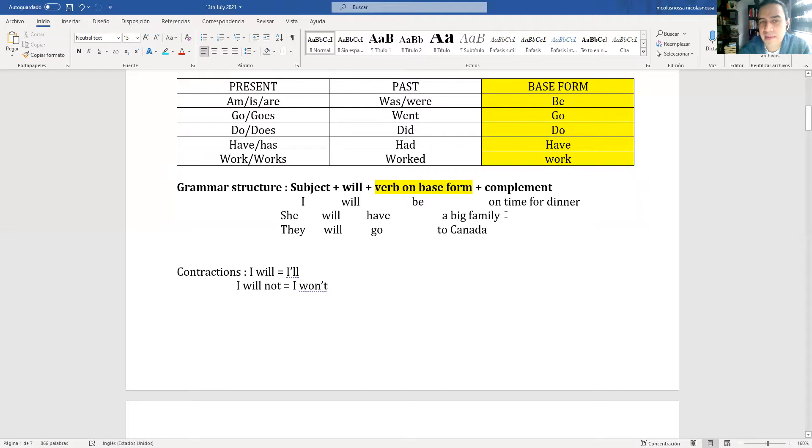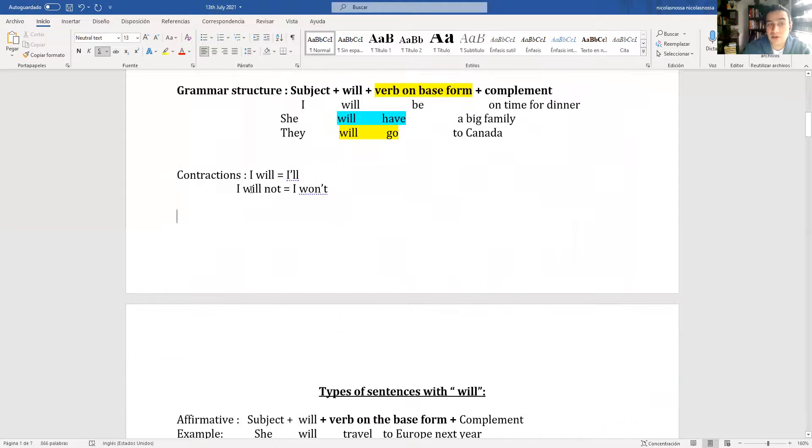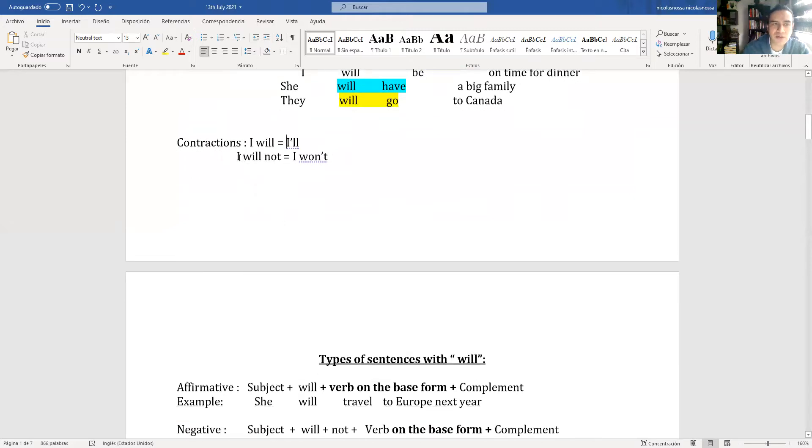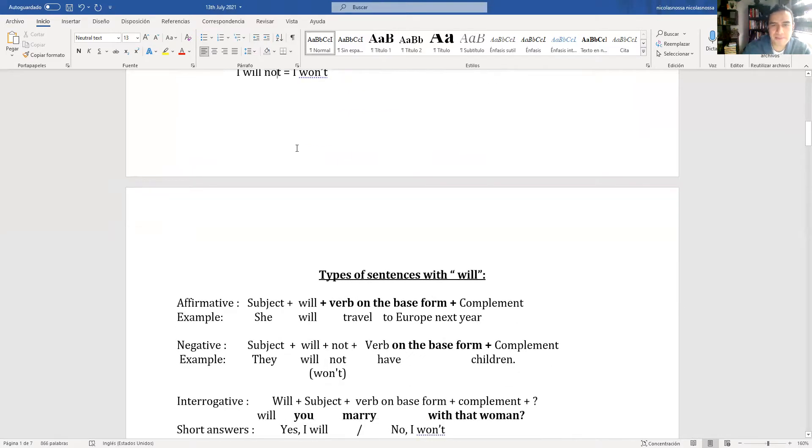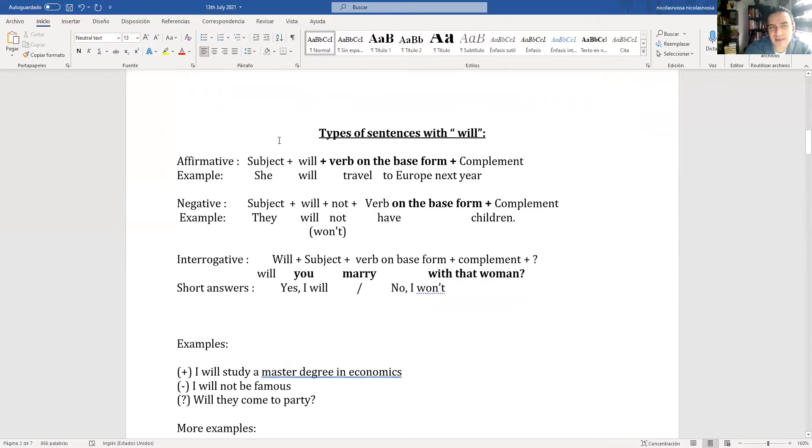The contraction for I will is I'll. The contraction for I will not is I won't. That is the contraction of the modal verb with the singular pronoun. For affirmative sentences: subject, will, verb on the base form, plus complement.